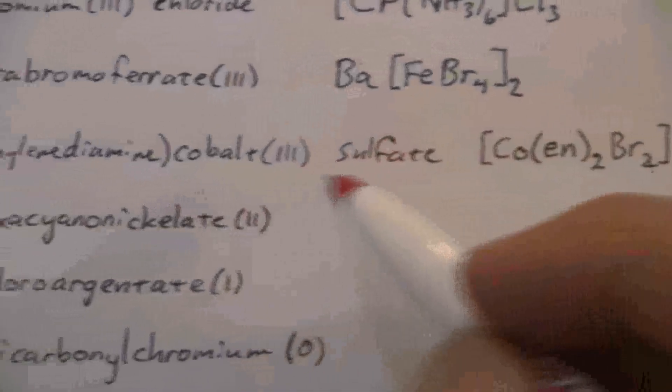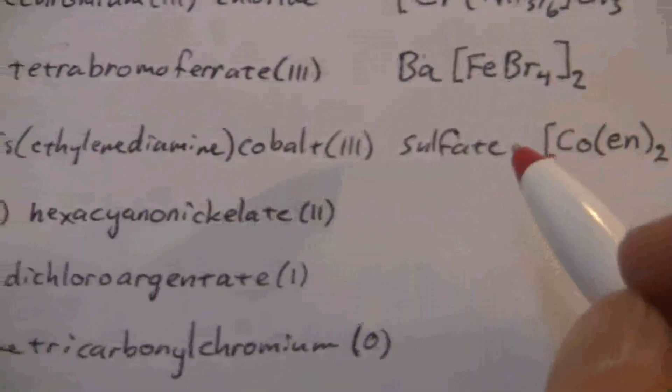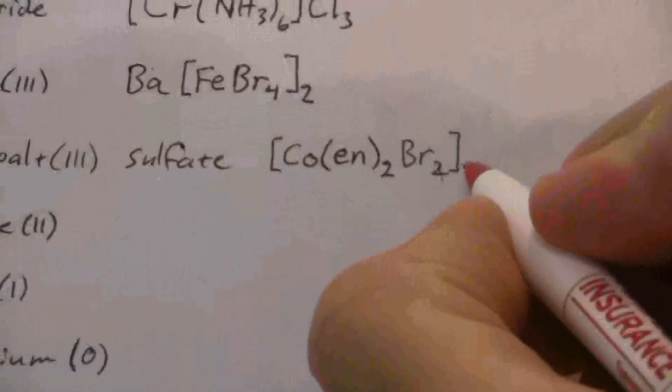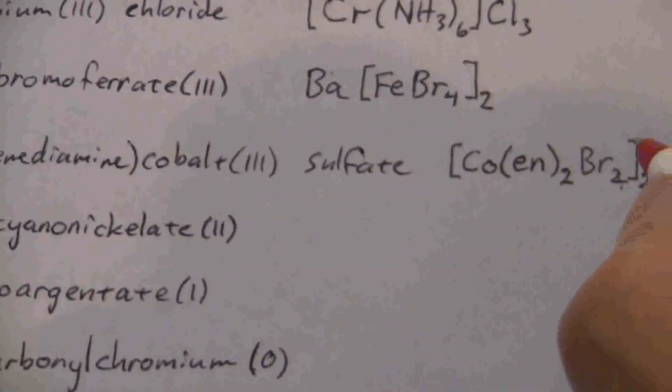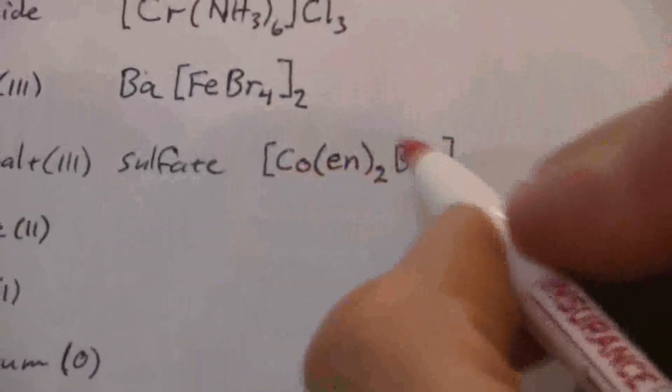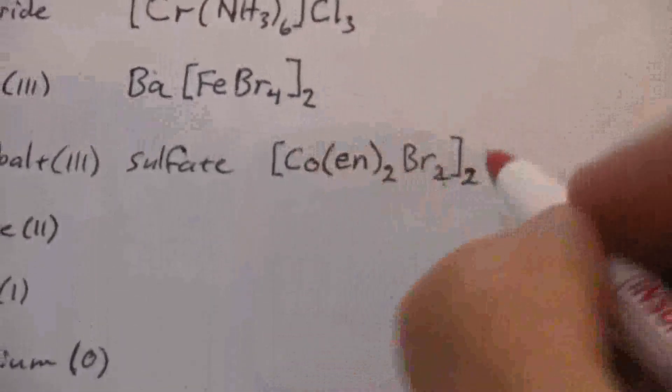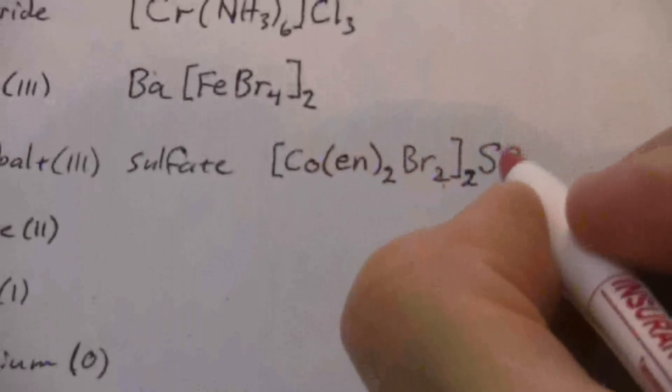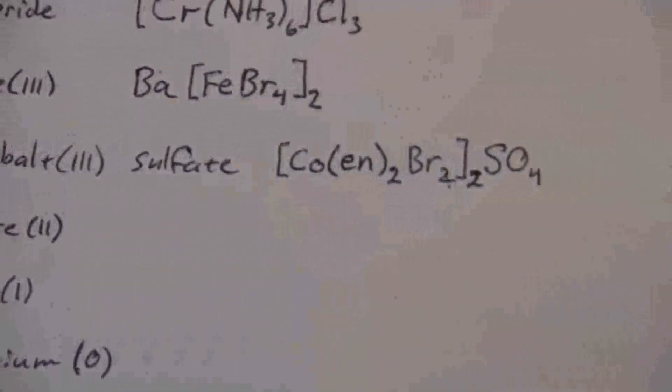And this is a sulfate, therefore I need two of those to balance out. I have a negative two, positive three, so that's a positive one. I have to have two of those to balance out the negative two of the sulfate.